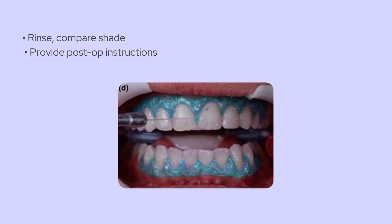All right, that wraps up today's session on external in-office bleaching. We covered how teeth get discolored, the differences between hydrogen peroxide and carbamide peroxide, when to use external versus internal bleaching, and the entire step-by-step procedure for in-office bleaching. If you found this helpful, make sure to hit that like button and subscribe for more Dental Deep Dives. Thanks for watching, and catch you in the next video.